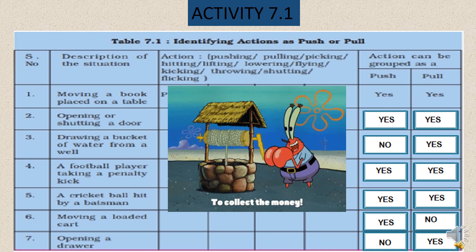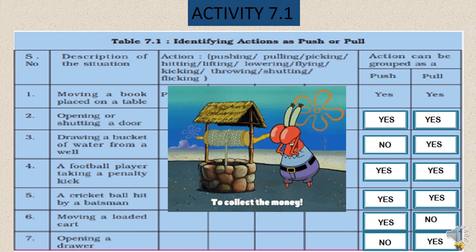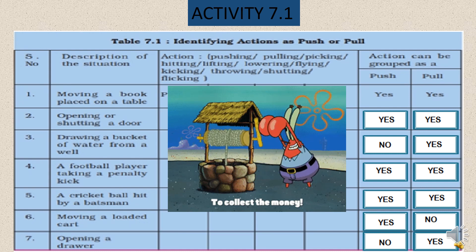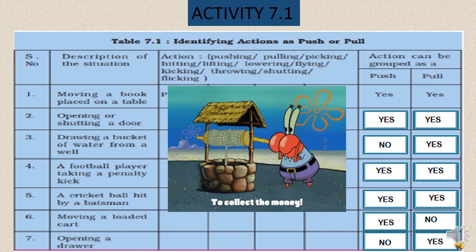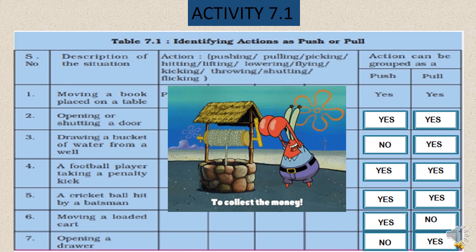The third example is drawing a bucket of water from a well. To take out the water from a well, we first lift the bucket and throw it in the well, and then with the help of a rope we pull it outside. The main action here is pulling the rope to bring the bucket outside. So I have written yes for pull and no for push.